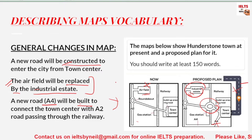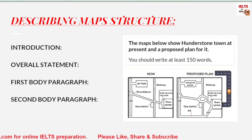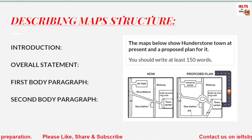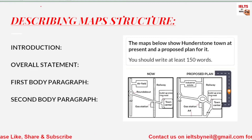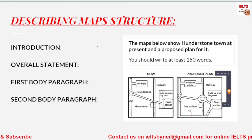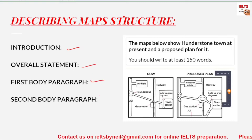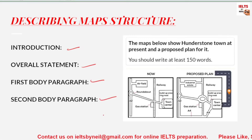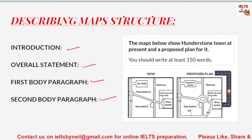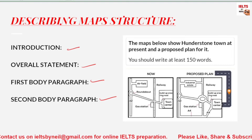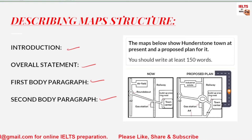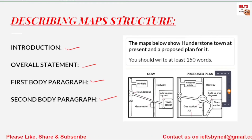Coming on to the structure — what should the structure be for map writing? The structure remains the same as for other task one academic writing: introduction, overall statement, first body paragraph, second body paragraph — it can be three body paragraphs as well. It depends on how you want to divide the information. The important thing is that you should be able to organize the information in a very structured way.